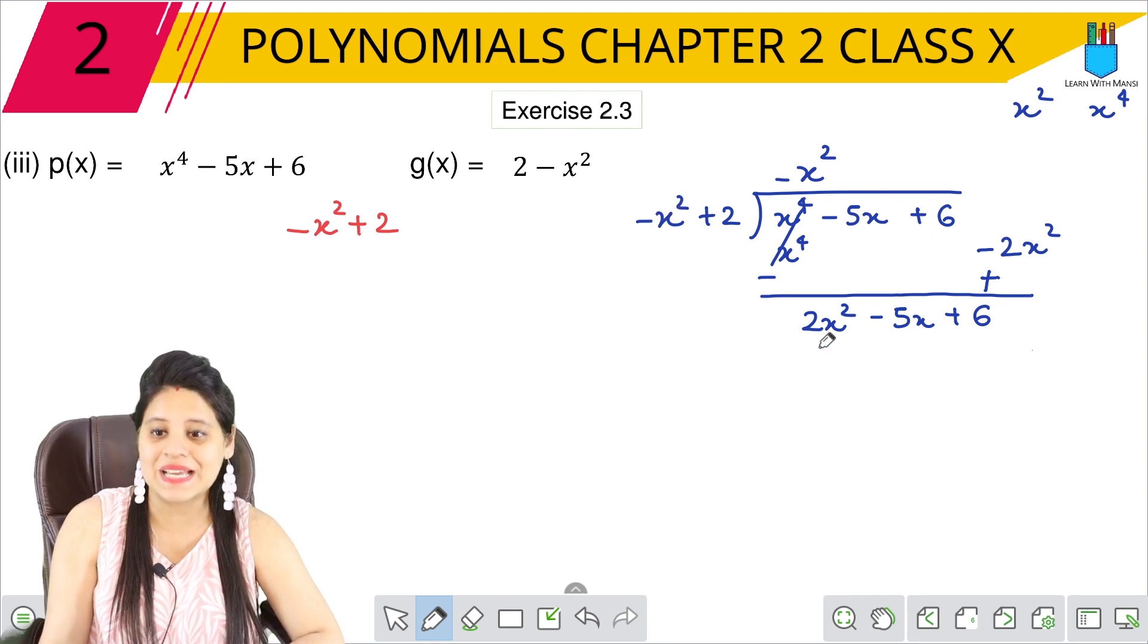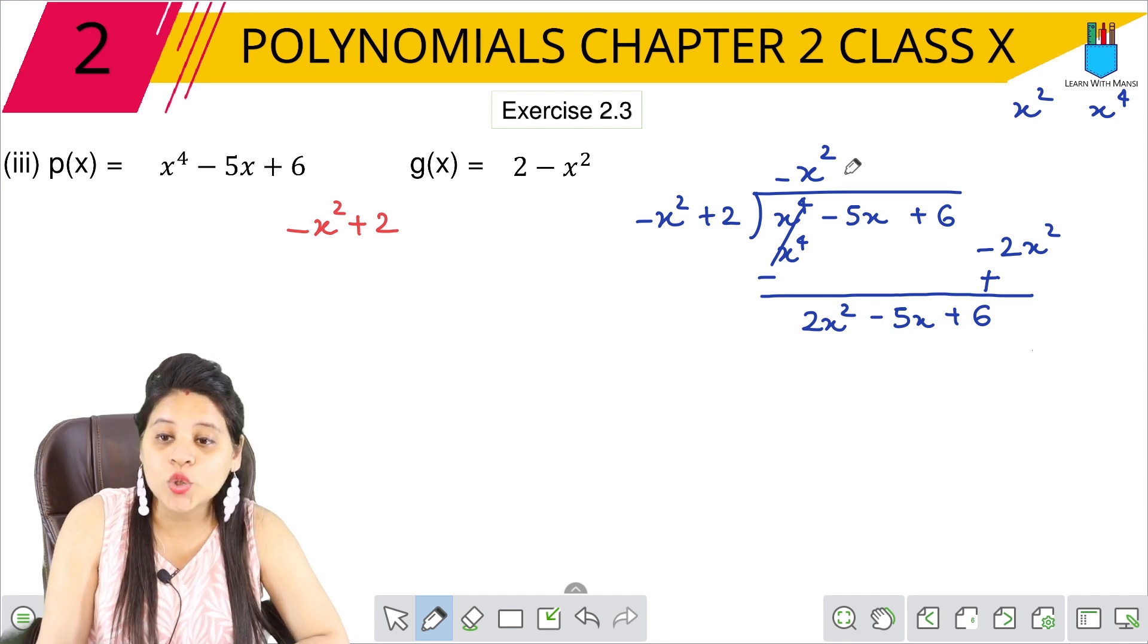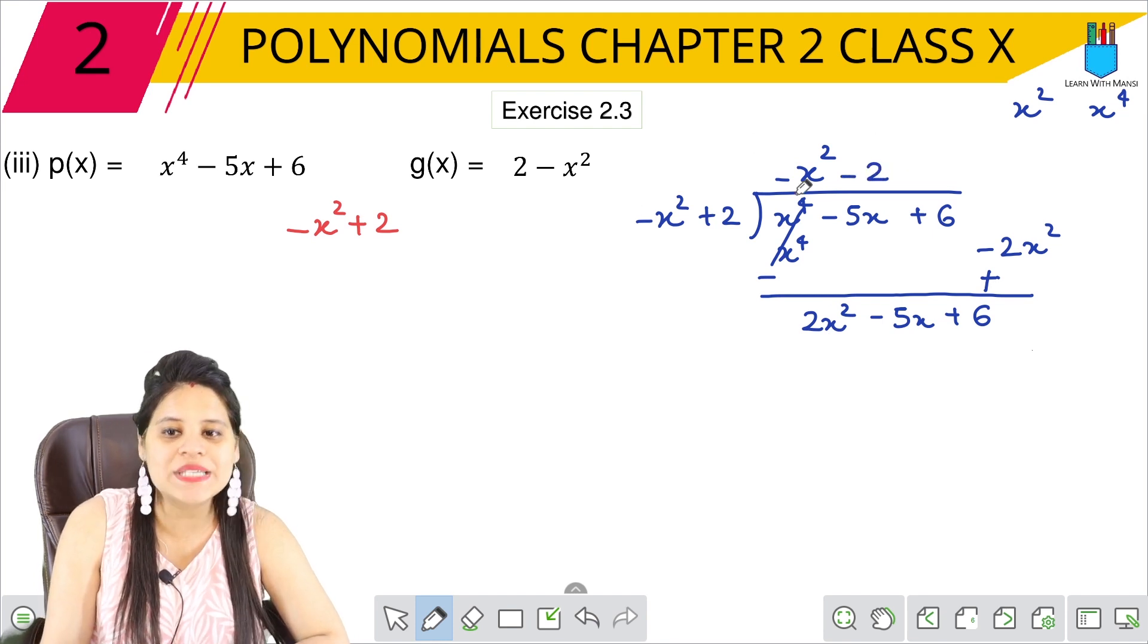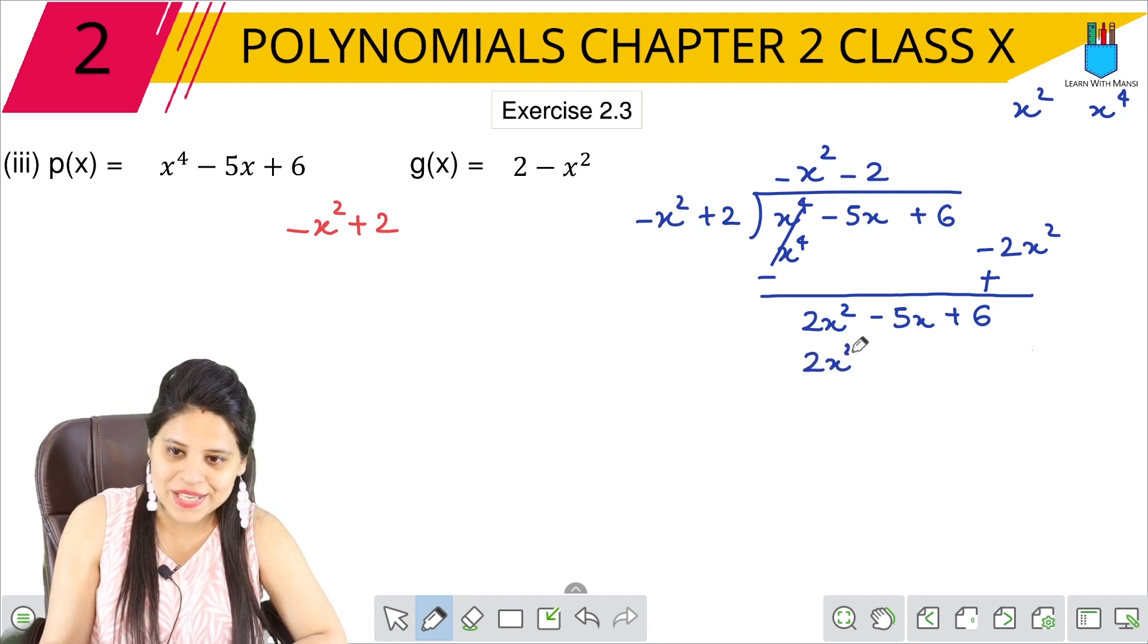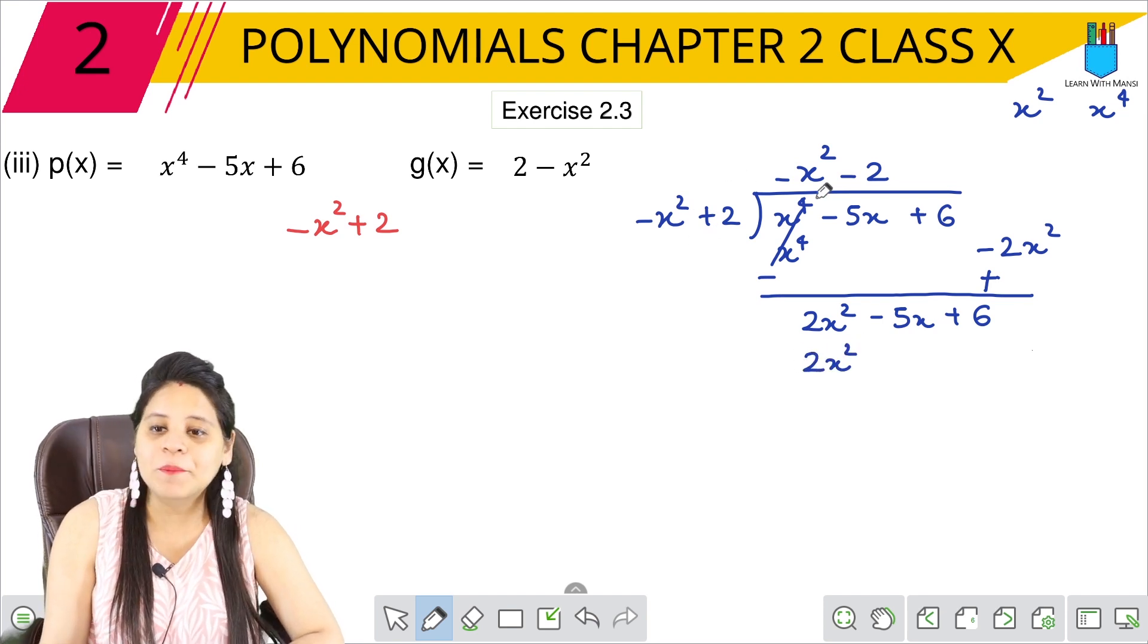But this is minus. I will take it to the power of plus, so we will do minus 2. So what will happen? Minus minus plus, and 2x square will be 2x square. Okay? Now we will do 2x square.